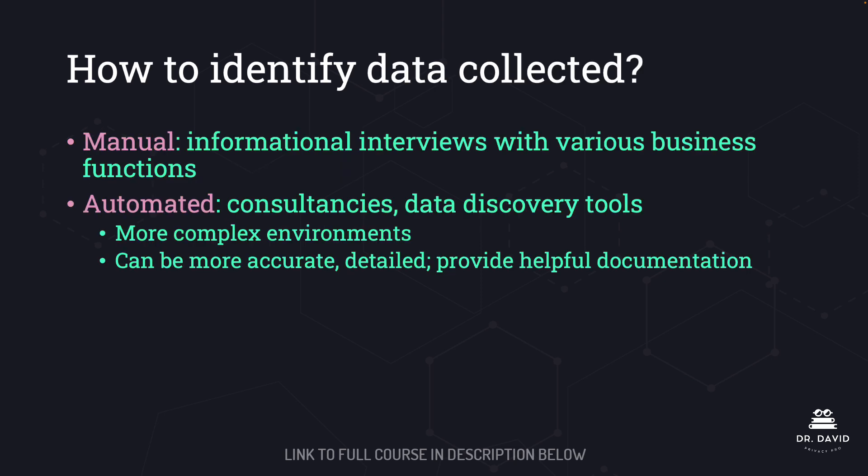When it comes to identifying the data that your organization collects, there are essentially two ways of doing this: the manual way and the automated way. The manual way typically involves carrying out informational interviews with people throughout your organization. We will spend a lot of time talking about different business functions later in the course, but you can think about the different offices that exist throughout a large or small organization — human resources, legal, finance, marketing, etc.